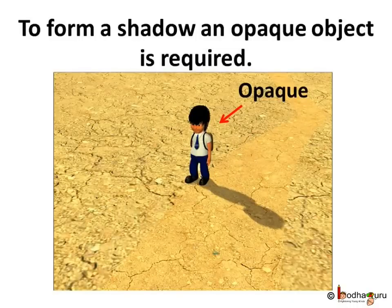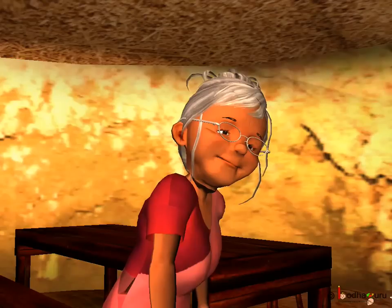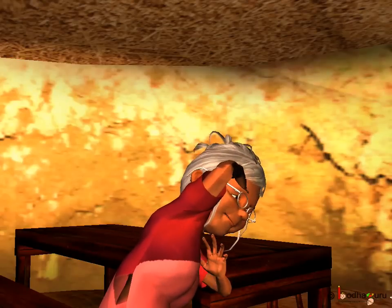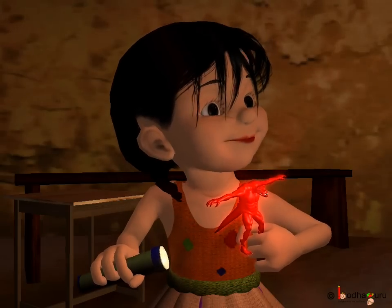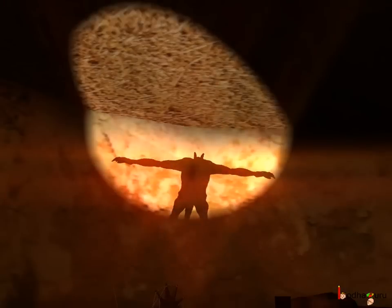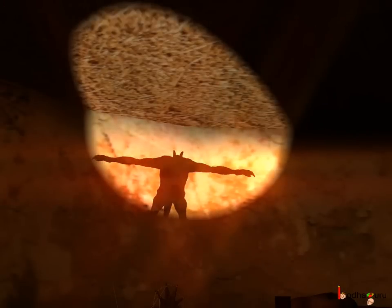Can a transparent object form a shadow? We know shadow is formed when an object blocks the path of the light. But a transparent object allows all the light to pass through it, so no shadow is formed. Hence, to form a shadow, an opaque object is required. Like in the story, Sona used a toy — an opaque object — whose shadow was formed on the ground as well as on the wall.